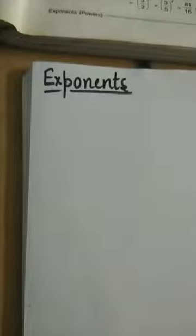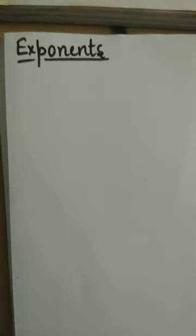We will start our chapter on Exponents. Let a number be 'a' or 'x', which is a real number. Real numbers are the numbers which can either be negative, positive, or zero — they include all the numbers: negative numbers, positive numbers, integers, natural numbers, and whole numbers.